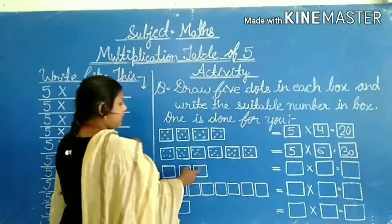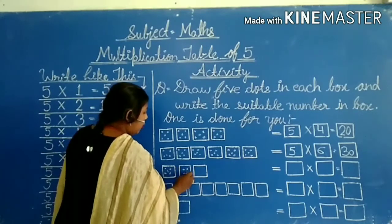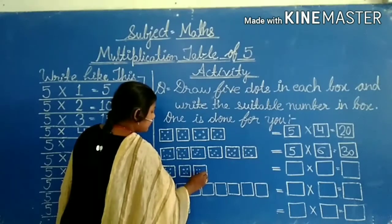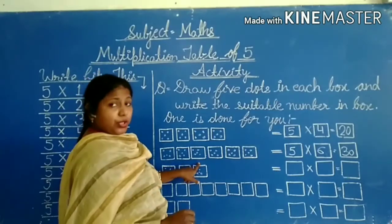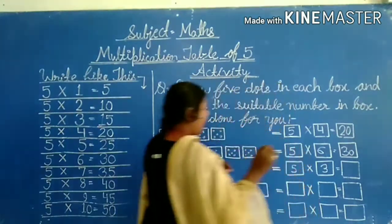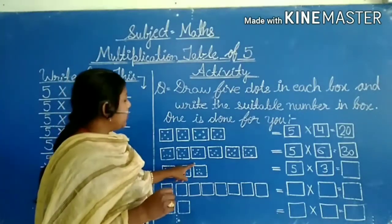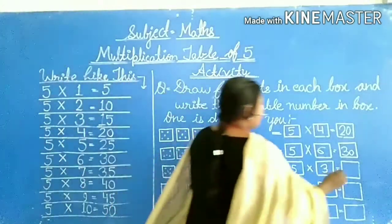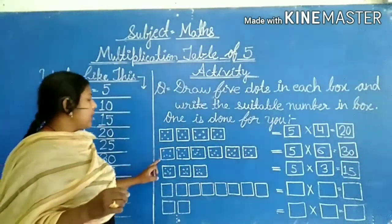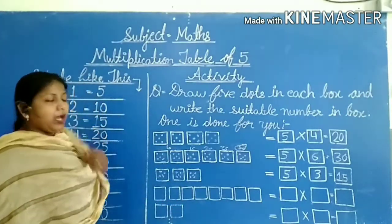We have 3 boxes. 5, 10, 15. You can write these patterns. Your answer will be this. This box is blank. If you look at this box and see it in your book, all of you write in your book and learn the table of five.